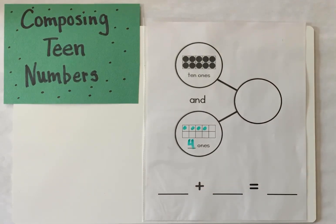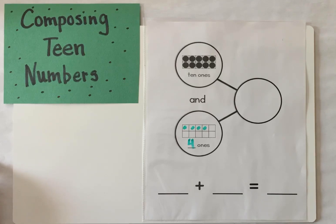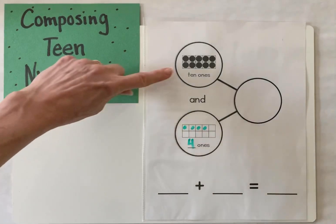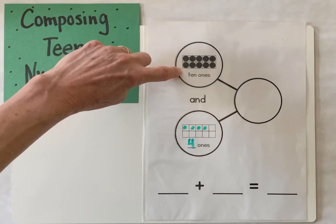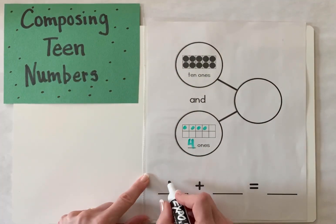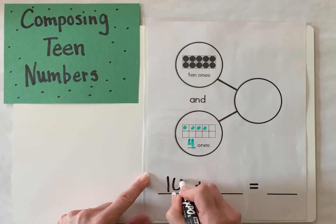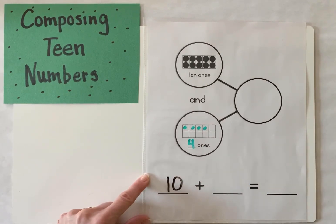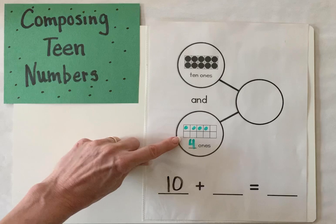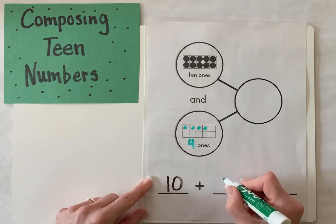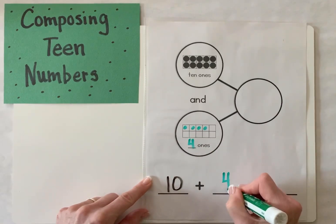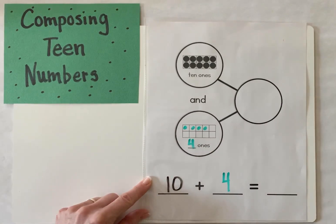Now let's go below and write our equation. Do you remember how to do it using our 10 frame model? Let's start here — how many ones did we have up at the top? That's right, we had 10. And how many more did we get? That's right, we got four more.